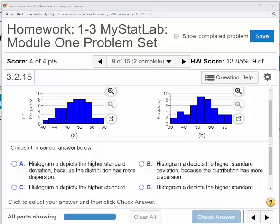So the way you figure this out is you look at the values along the horizontal axis. So look at this one, it goes from 40 to 44 to 48 to 52 to 56 to 60, those numbers are pretty close together.